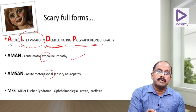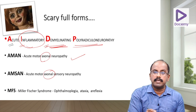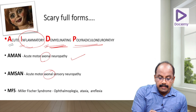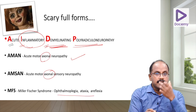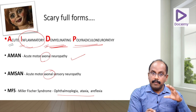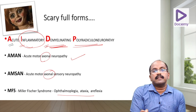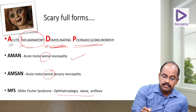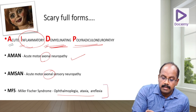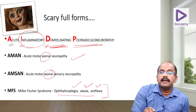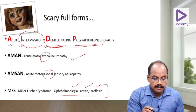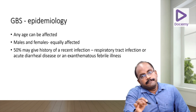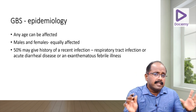In Miller Fisher Syndrome, even though it is a neuropathy, it does not present with weakness of the limbs. Instead, the key features are ophthalmoplegia (eye movement paralysis), ataxia, and areflexia. Weakness of limbs is not a feature of Miller Fisher Syndrome.